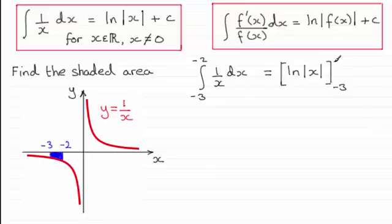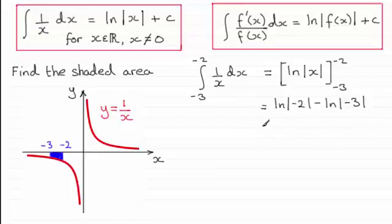Substituting our limits in, we have the natural log of the modulus of minus 2, minus the natural log of the modulus of minus 3. Because we have a modulus sign around each value, we take the positive values. So we're looking at the natural log of 2 minus the natural log of 3. Using the simplifying rules for logs, subtracting two log values gives the natural log of 2 thirds.